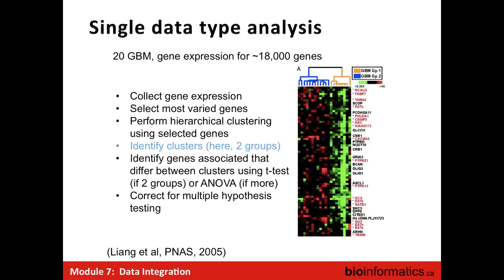Let's start with single data type analysis. This is a paper published in 2005 in PNAS, which looked at 20 glioblastoma cancers and gene expression on 18,000 genes. What did they do? They collected gene expression, looked at the most variable genes across their collection, and performed hierarchical clustering. I'll briefly go through what hierarchical clustering is.